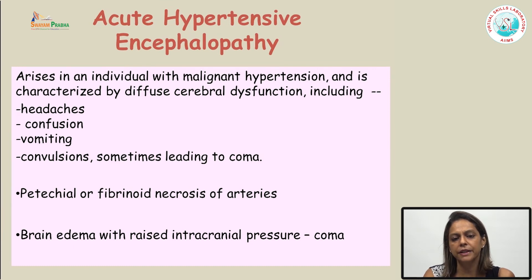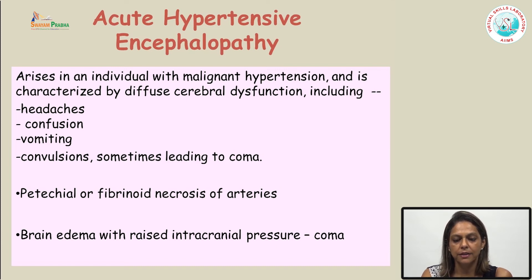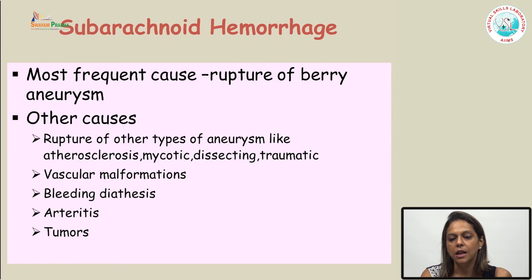Acute hypertensive encephalopathy is seen in patients with malignant hypertension. It is characterized by diffuse cerebral dysfunction — the patient presents with headache, confusion, vomiting, and convulsions. Microscopically, there is fibrinoid necrosis of the vessels. Most patients develop high intracranial pressure, lie in a comatose state, and most of them die.